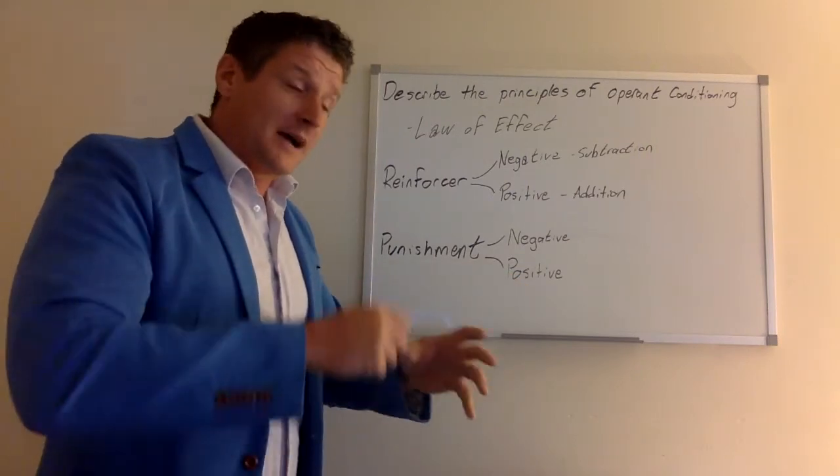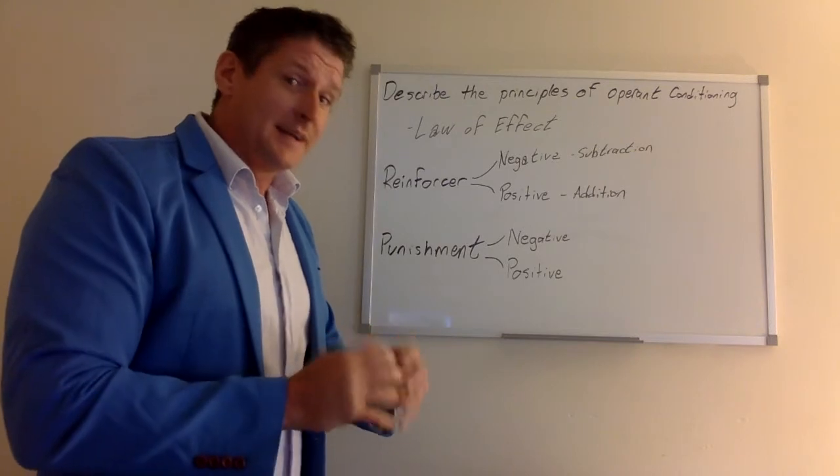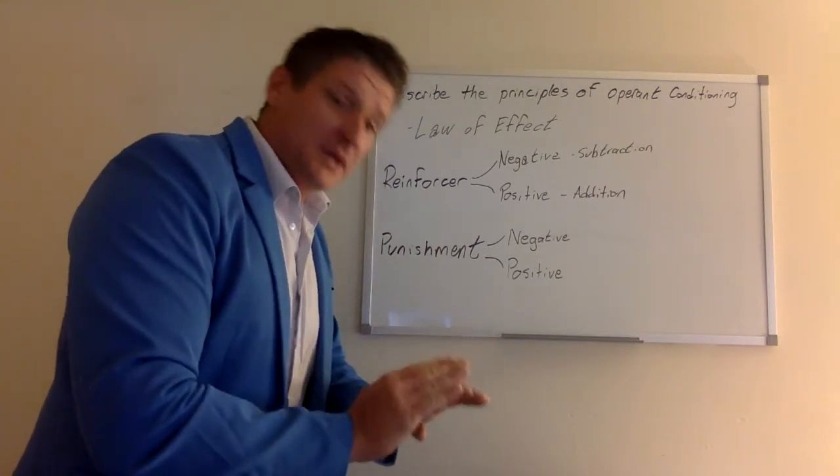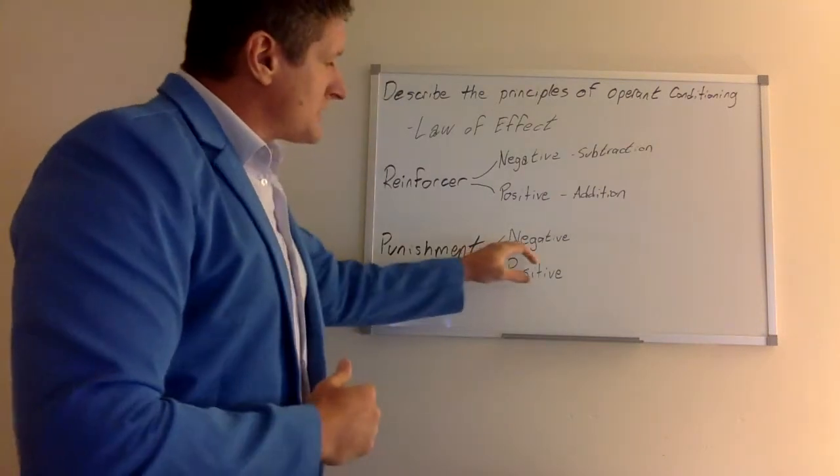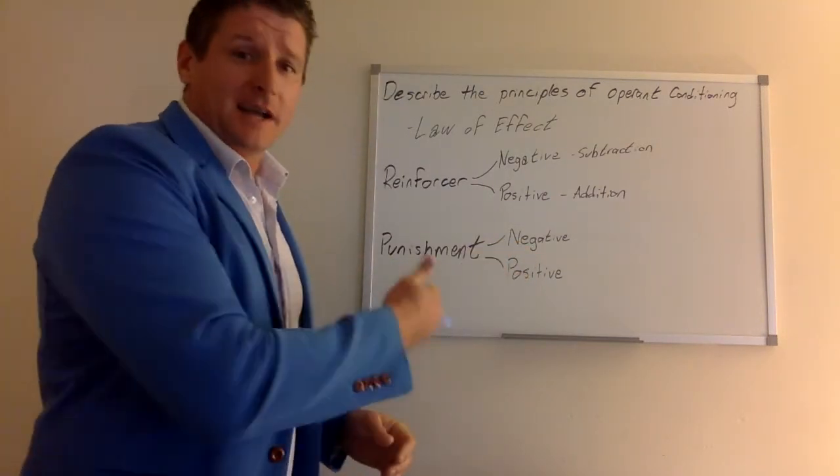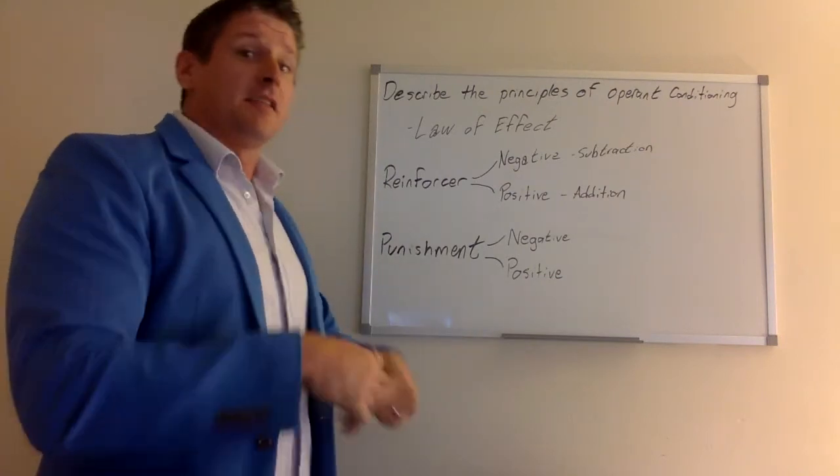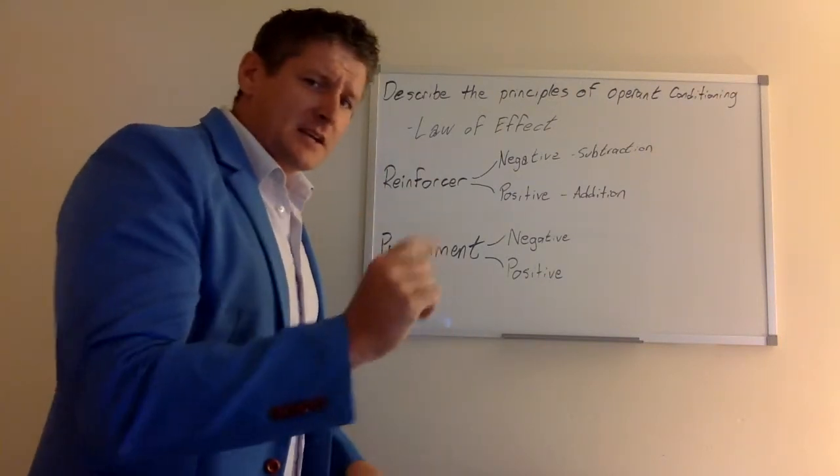I'm taking away, or rather I'm doing something to the cat that it doesn't like in order to take away the likelihood of that behavior occurring. You could also have negative punishment. I have a daughter. If I take away something that she likes, that's me as a parent using a negative punishment.